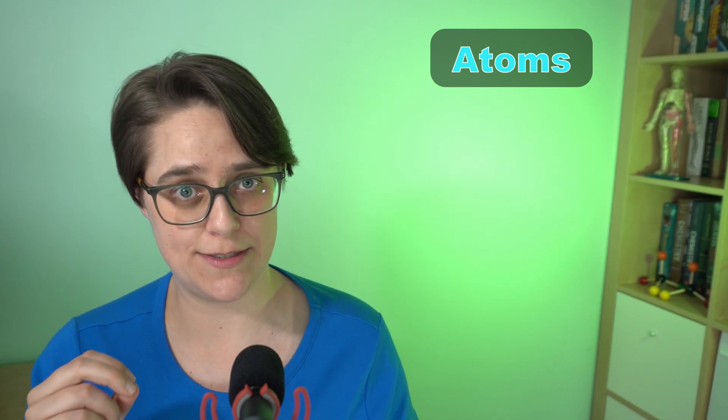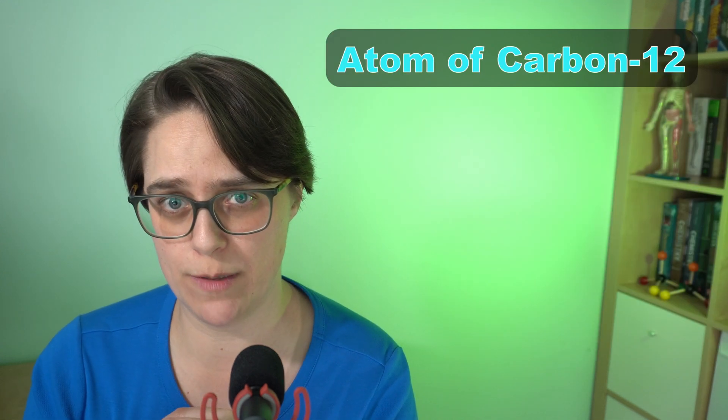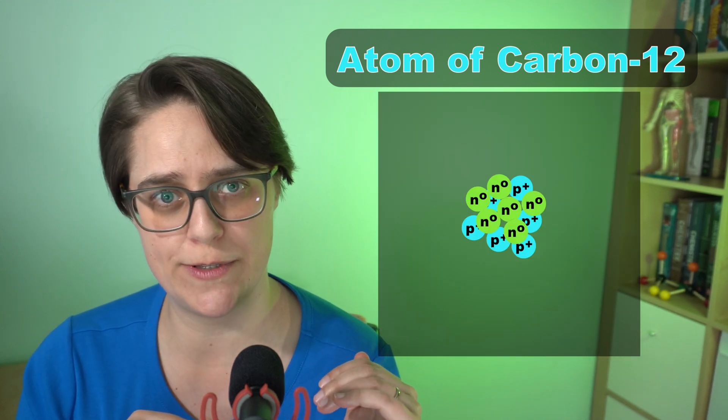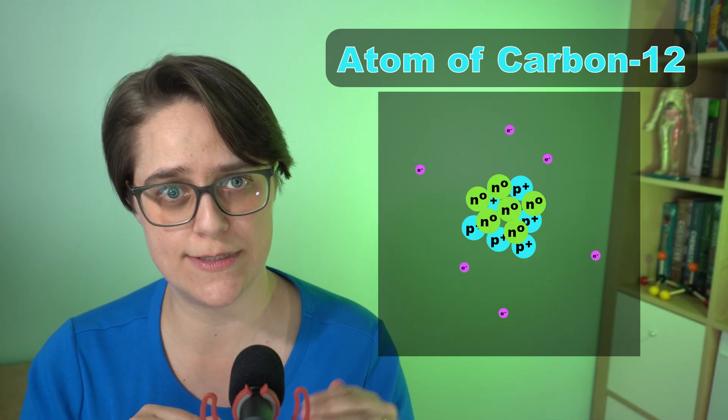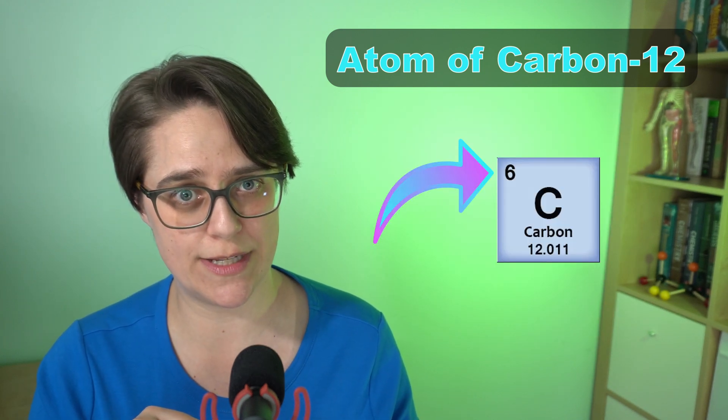Atoms consist of protons, neutrons, and electrons. Consider a single atom of carbon-12. It consists of six protons and six neutrons in a nucleus with six electrons in orbitals. It's also element number six on the periodic table.